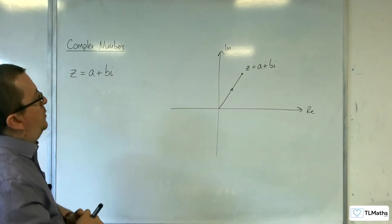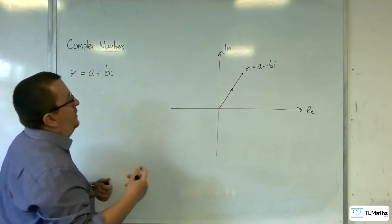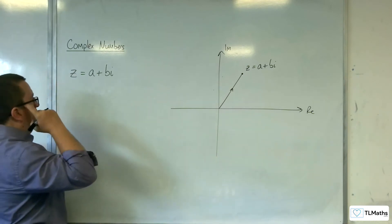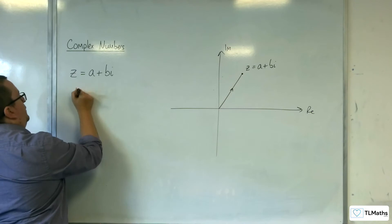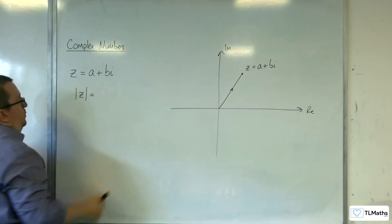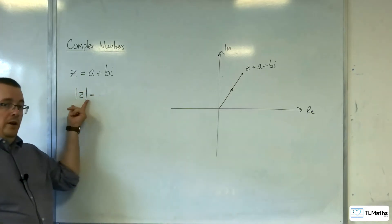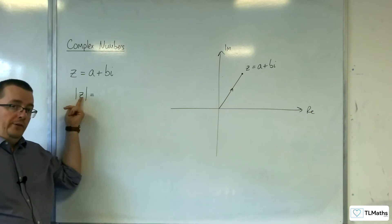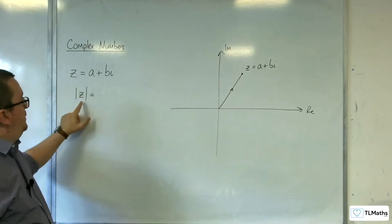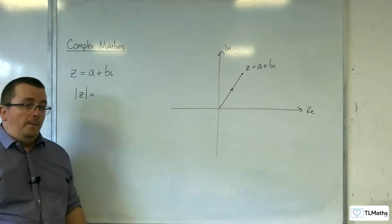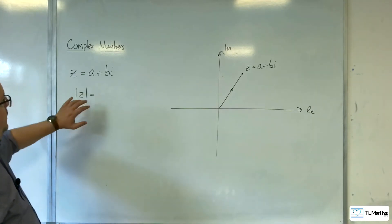First of all, let's consider the modulus. The modulus of a complex number is its length. These vertical lines are referred to as the modulus. The modulus function is something that you explore in A-level maths as well.